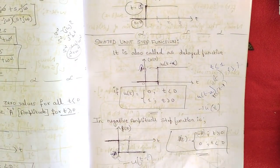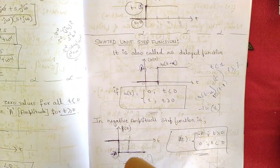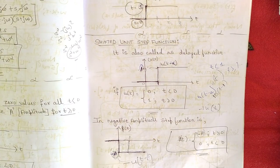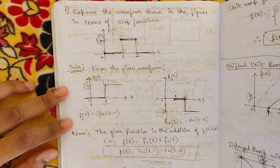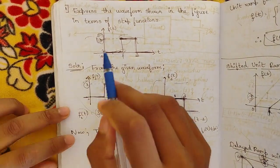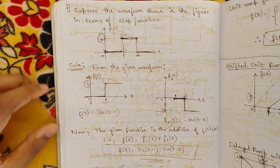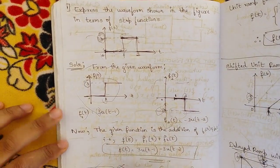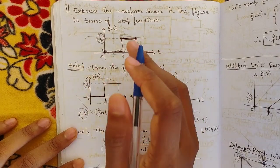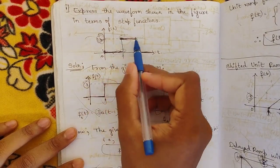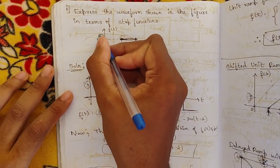These are the key terms related to the step function that you need to know, because the problems you will be solving are of this kind. Now let us look at an example problem. A graph is given and the task is: express the waveform shown in the figure in terms of step functions. If you observe the graph carefully, it consists of combined terms — a step function, a delayed step function, and a negative delayed step function.